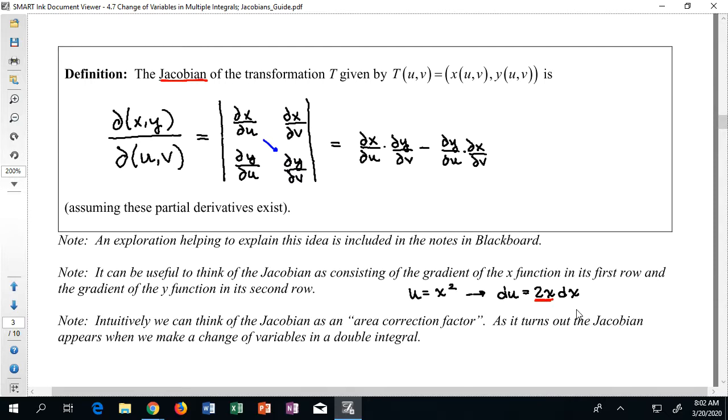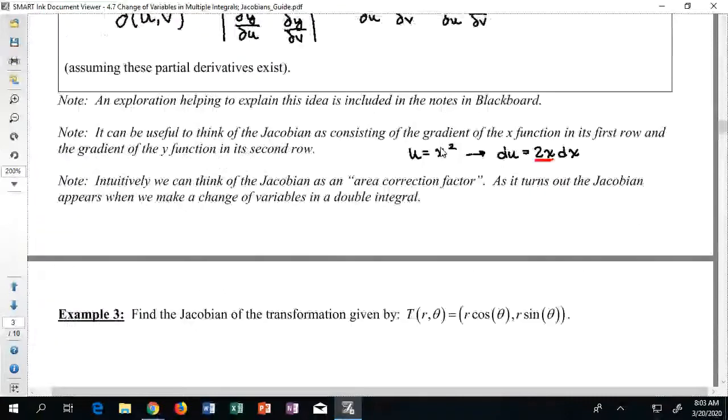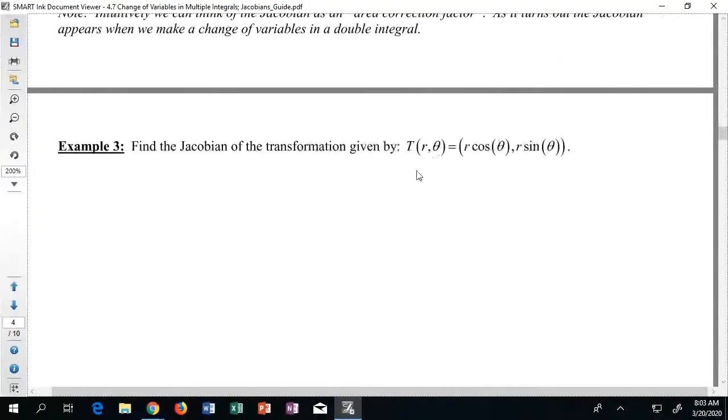Now memorizing this sort of formula can be a bit intimidating at first, but I always like to think about it in the following way. I can kind of think about the top row as operating like the gradient of the x function—partial with respect to u, partial with respect to v—and then the next row can be considered as the gradient of the y function. That at least helps me to remember where everything goes in the initial setup, and then the calculation after the fact is fairly simple. So take a look at example 3 and you'll see how this works.